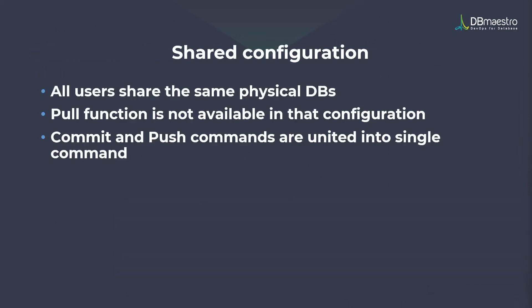Now let's move to the shared configuration. As mentioned, in a sandbox project each user has their own sandbox database, but in a shared configuration all users will be using the same physical sandbox database. Creating a shared project requires the same things as a sandbox project: the alias name, the git repo link, and the physical database to connect to. Since all users work on a single physical database, the pull functionality is not provided in this configuration, and the commit and push commands are combined into one step instead of two.